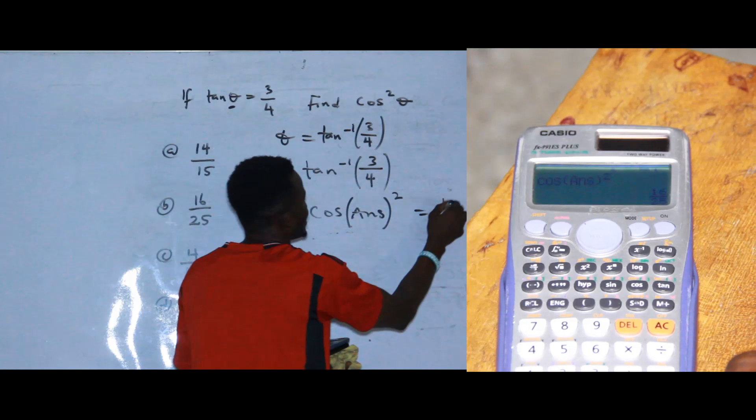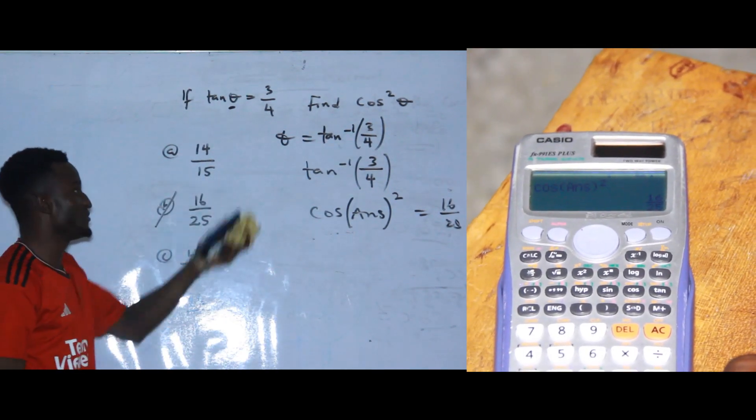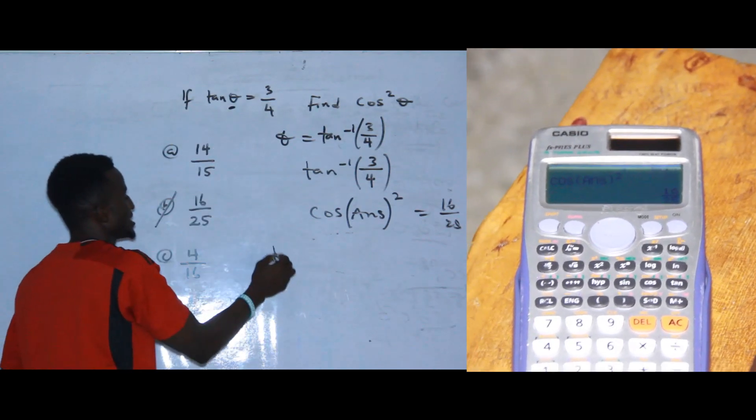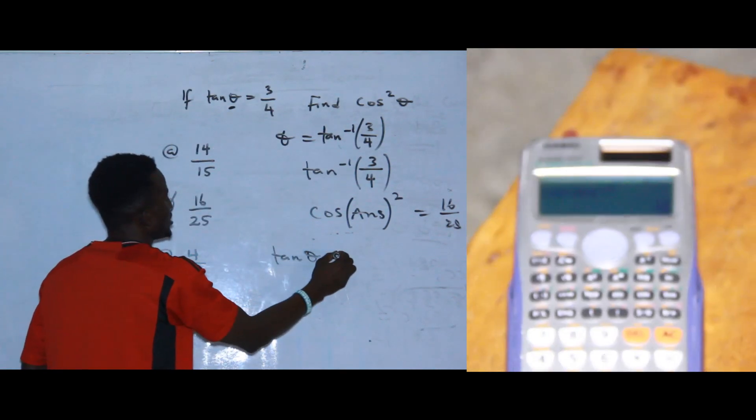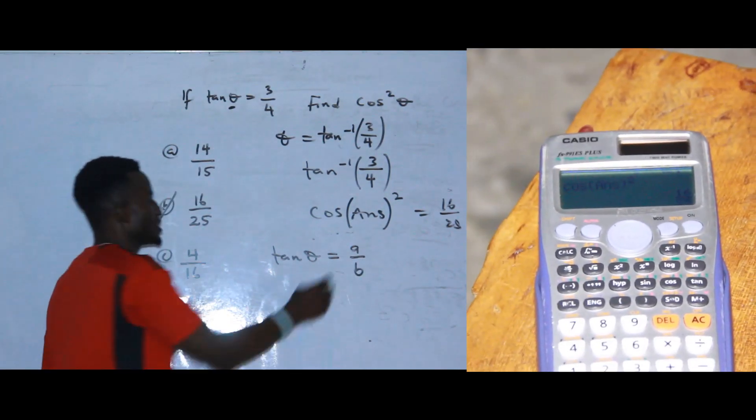Press equals to. You observe that the answer here is 16 over 25, and this is it: 16 over 25. I believe if you are given any structure of the question like this, even if you are given a question like this, if tan theta is equal to a over b, don't worry.